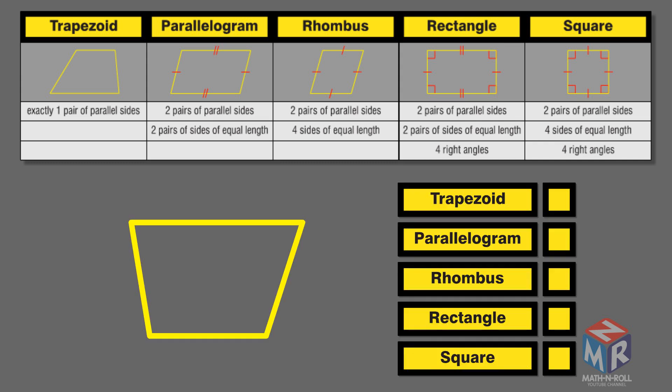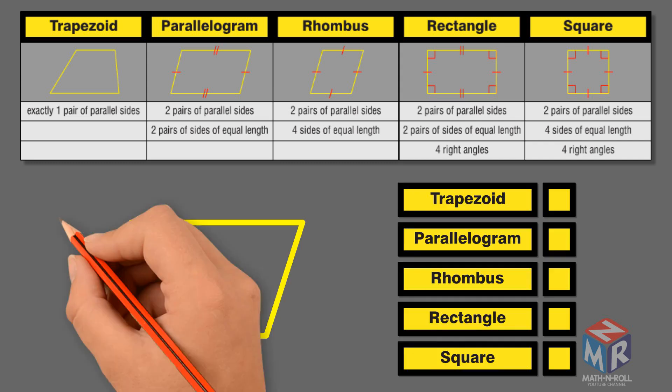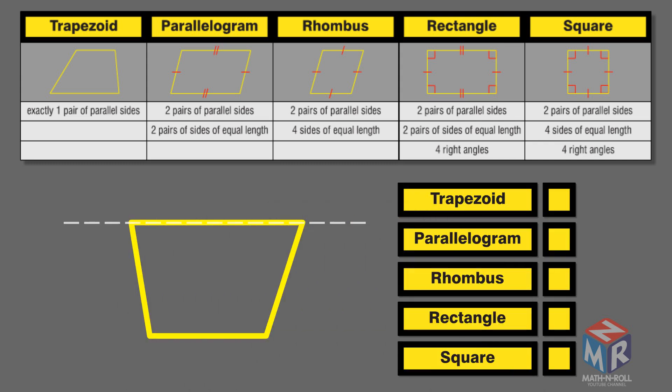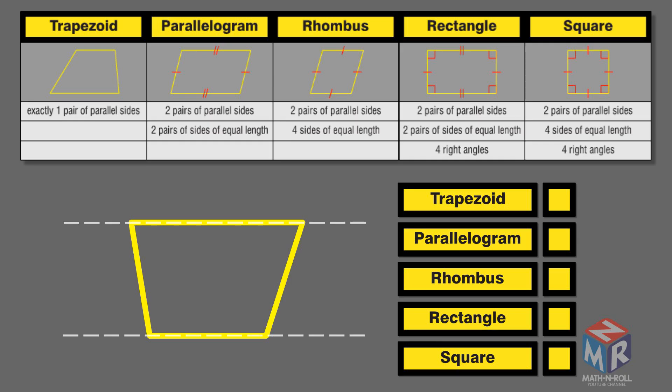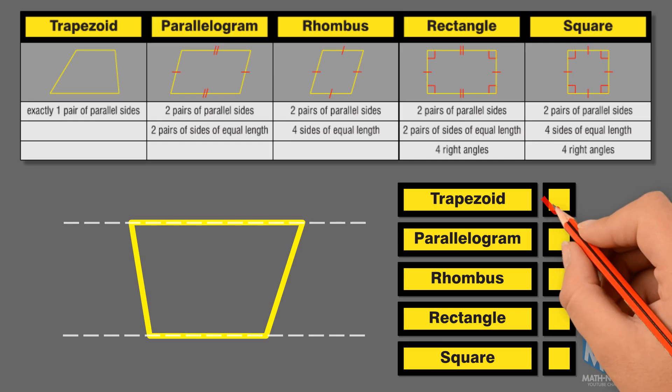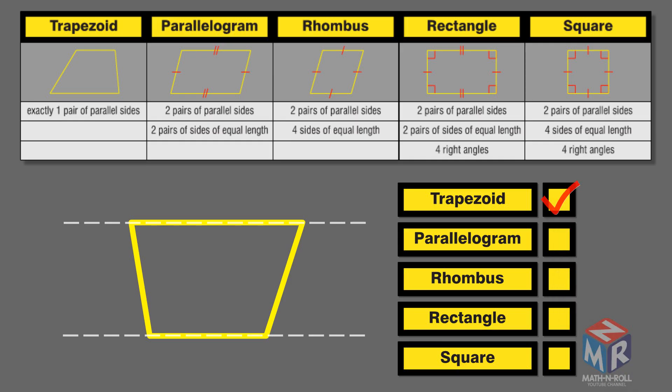Let's take a look at another quadrilateral. It is a trapezoid because it has one pair of parallel sides. It is not a parallelogram, rhombus, rectangle, or square because it does not satisfy the requirement of two pairs of parallel sides.